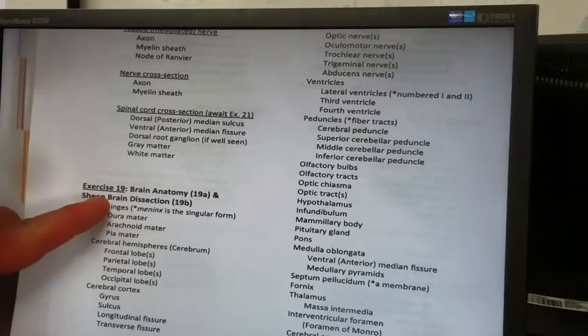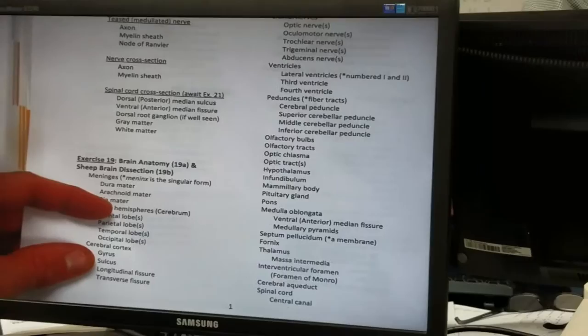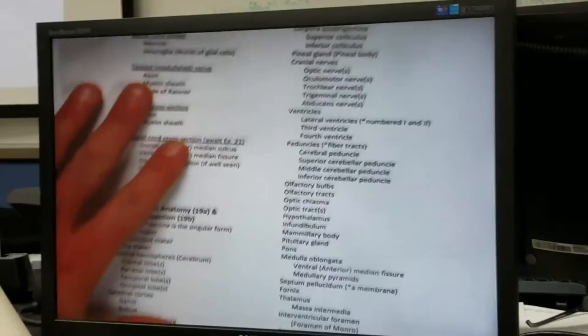But I do have brain models out on everybody's tabletop. There should be a brain model somewhere near you. You should be able to identify the different structures here, except we left off those peduncles, we left off the mammary body.